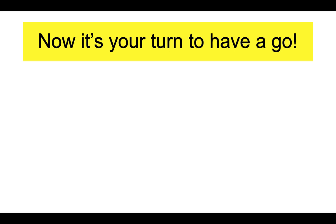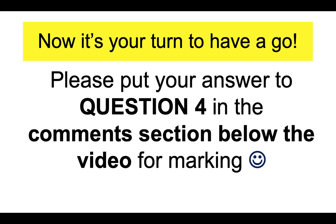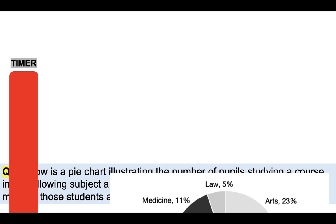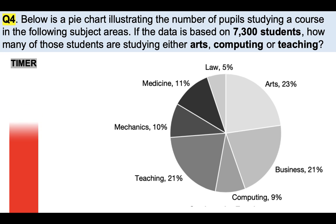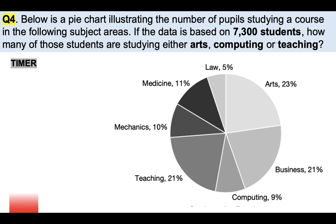So now it's your turn to have a go at a pie chart test question. Please put your answer to question 4 in the comments section below the video for marking. The question is: below is a pie chart illustrating the number of pupils studying a course in the following subject areas. If the data is based on 7,300 students, how many of those students are studying either arts, computing or teaching? Brilliant, well done. Let's now move on to another question.